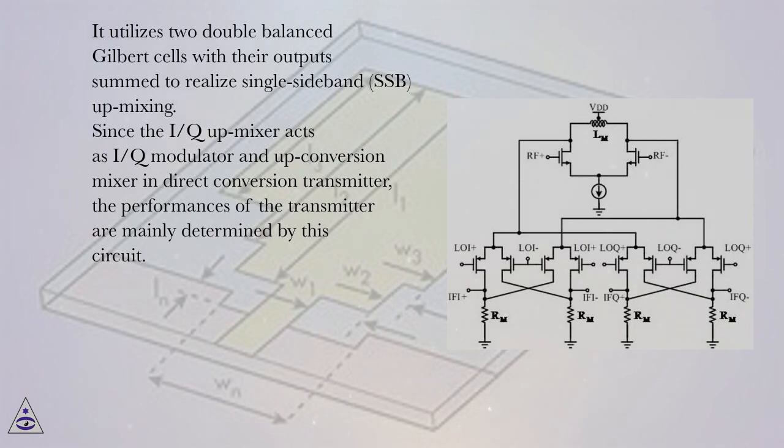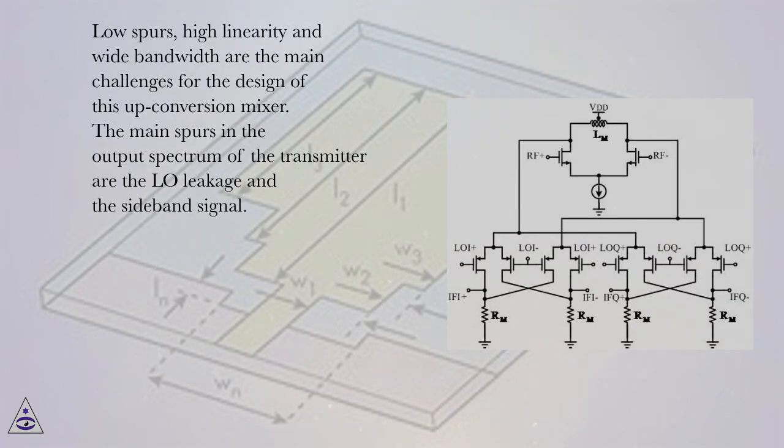Since the IQ up-mixer acts as IQ modulator and up-conversion mixer in direct conversion transmitter, the performances of the transmitter are mainly determined by this circuit. Low spurs, high linearity and wide-band width are the main challenges for the design of this up-conversion mixer.